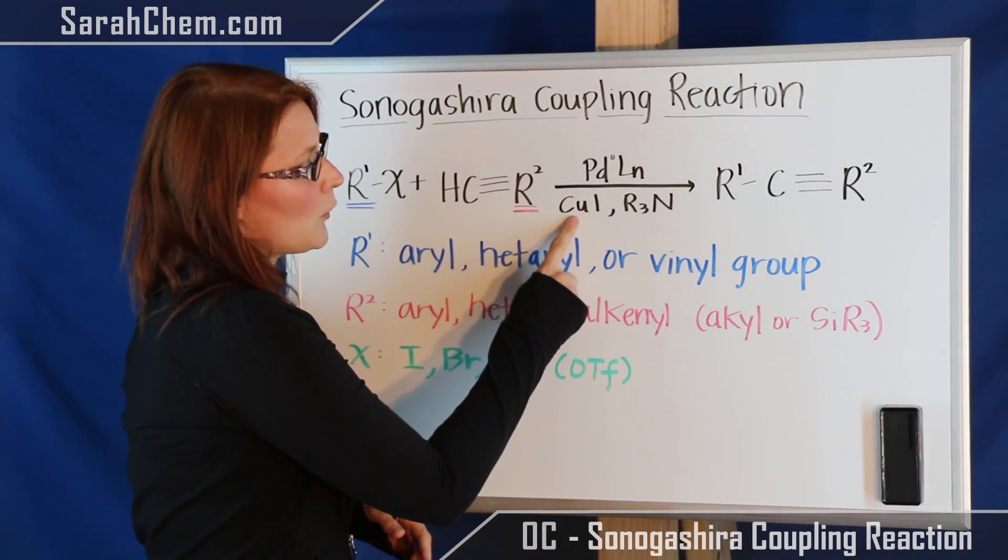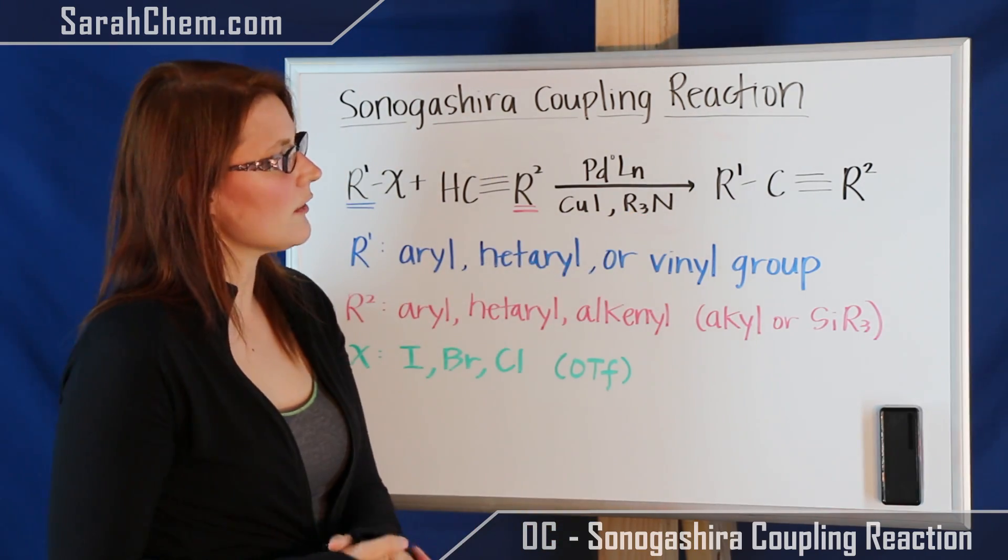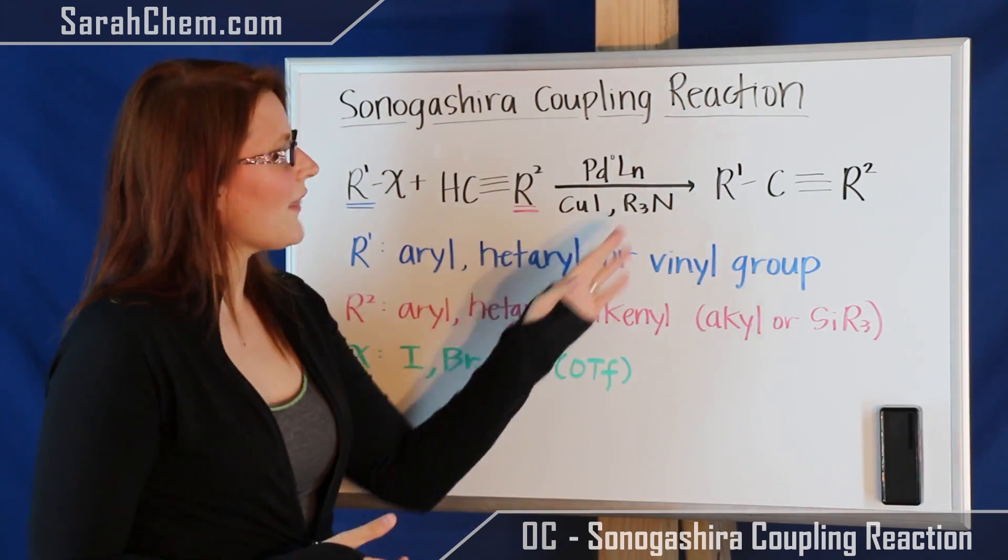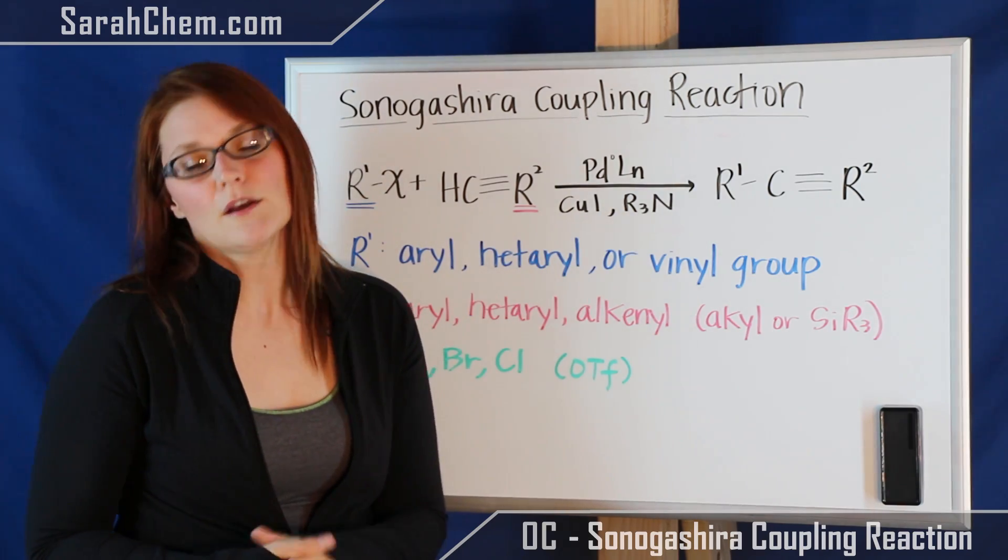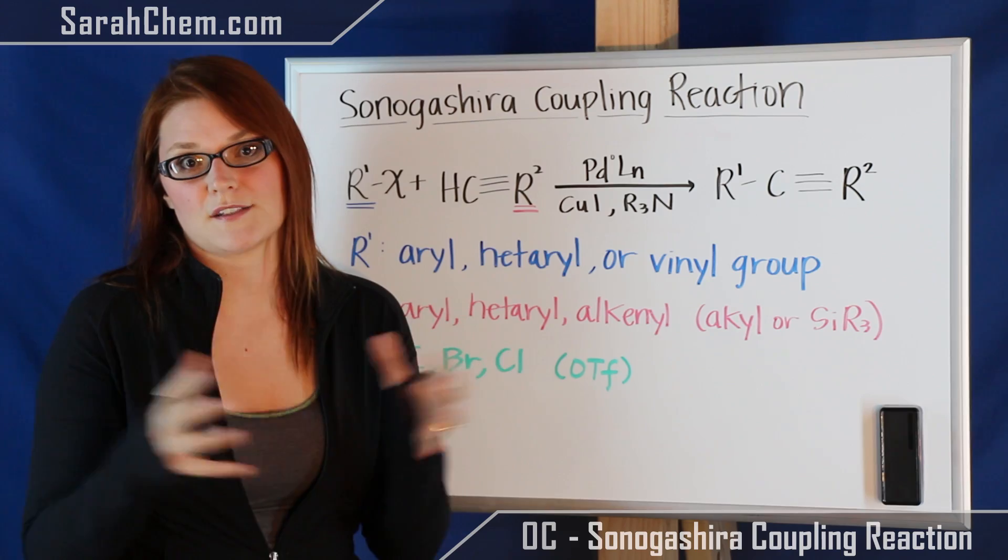We also here have our copper-1 salt. Most often we'll see copper iodide and then we have a base in the reaction that winds up being pretty important and that is typically some kind of amine though you can have TBAF, you can have DMSO, you can have a lot of other things that are put in that section.